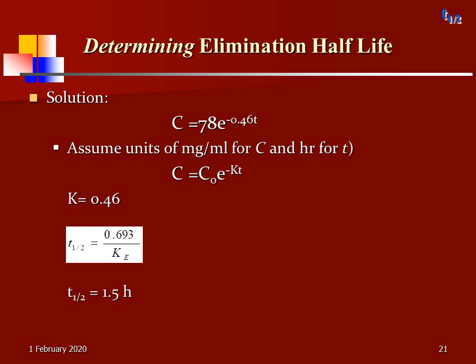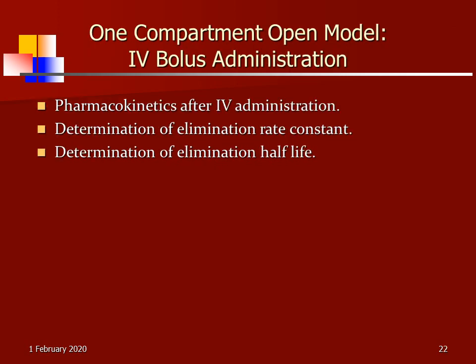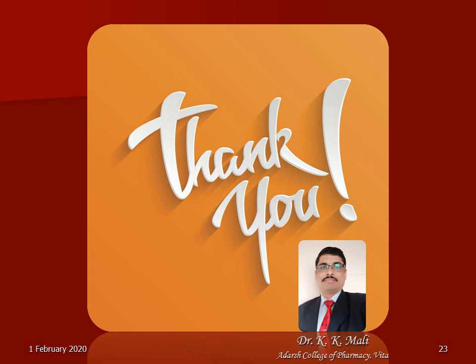We have seen the application of pharmacokinetic equations in the determination of elimination half-life and elimination rate constant. Today we covered the one compartment open model intravenous bolus administration — the pharmacokinetics of drug after IV administration, how to determine the elimination rate constant, and how to determine the elimination half-life. Hope the information is useful to calculate these secondary pharmacokinetic parameters after IV bolus administration. Thank you very much.